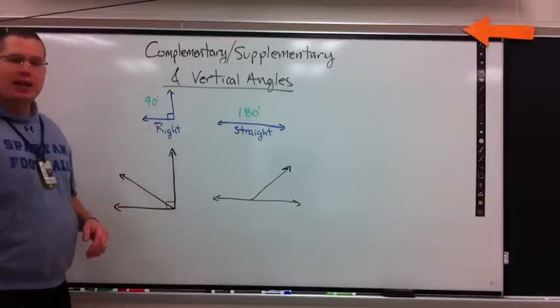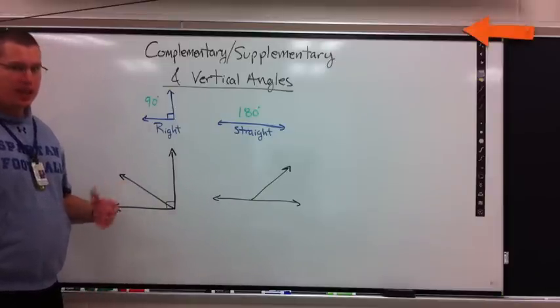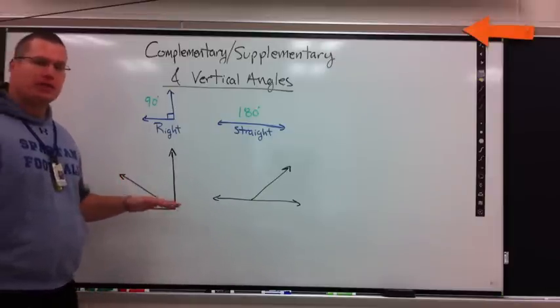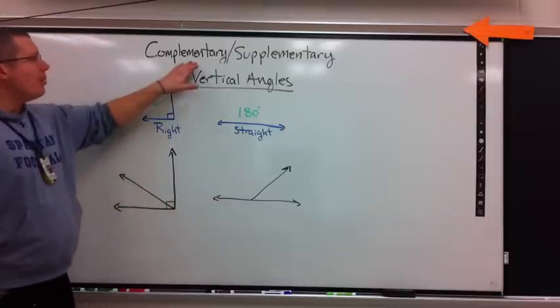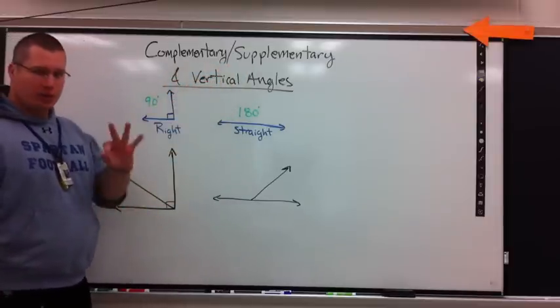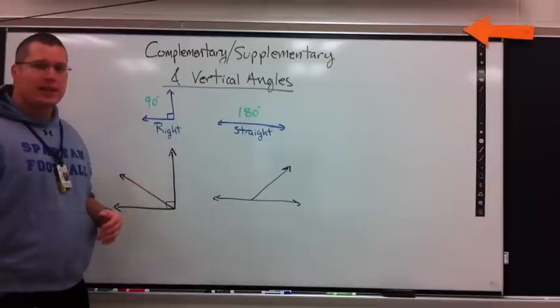Our next stop is we want to take a look at types of angles that you've seen in the past, but we want to use some algebra mixed in with it as well. Complementary, supplementary, and vertical angles. Three different types. So we're going to talk definitions first.